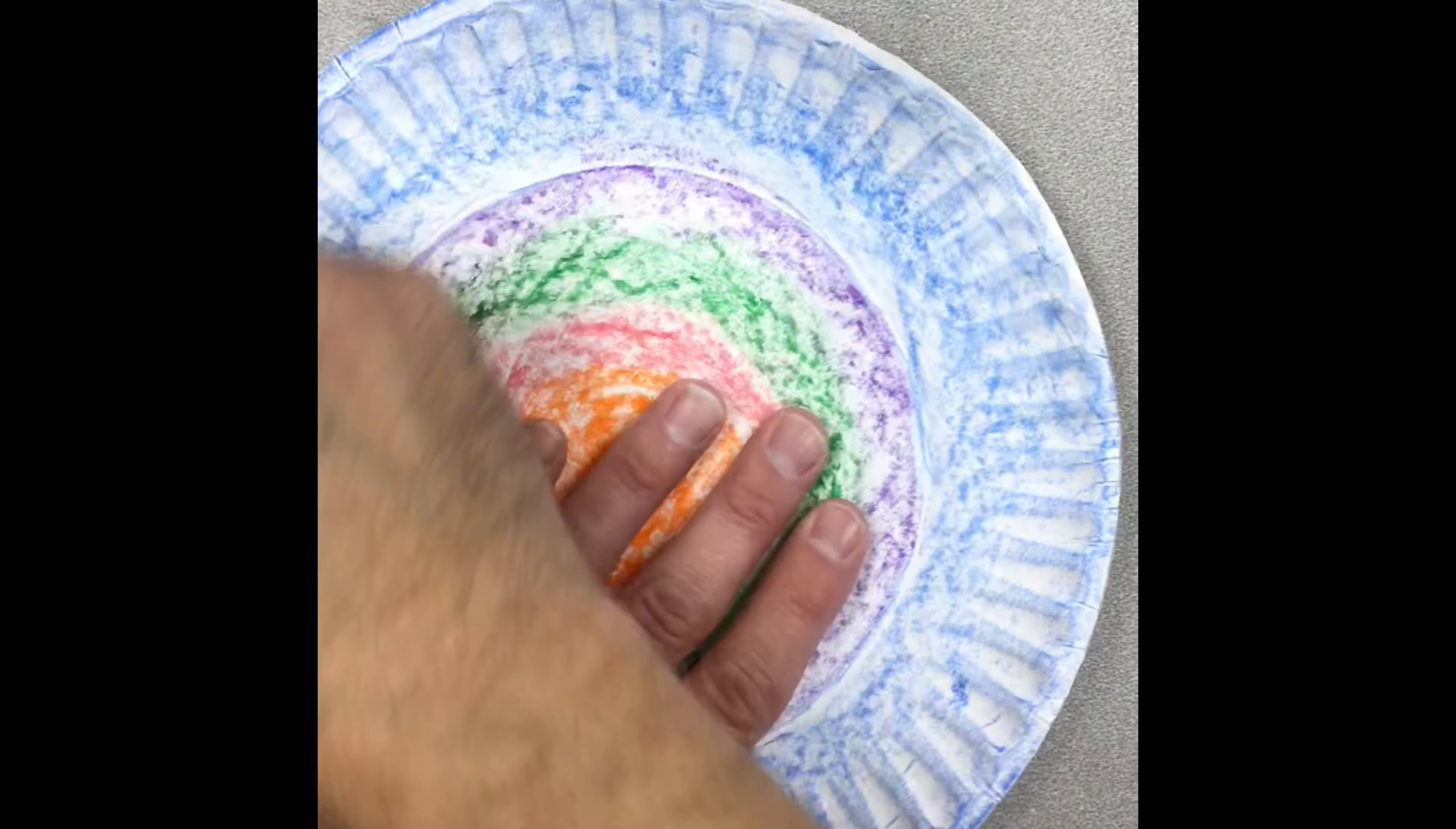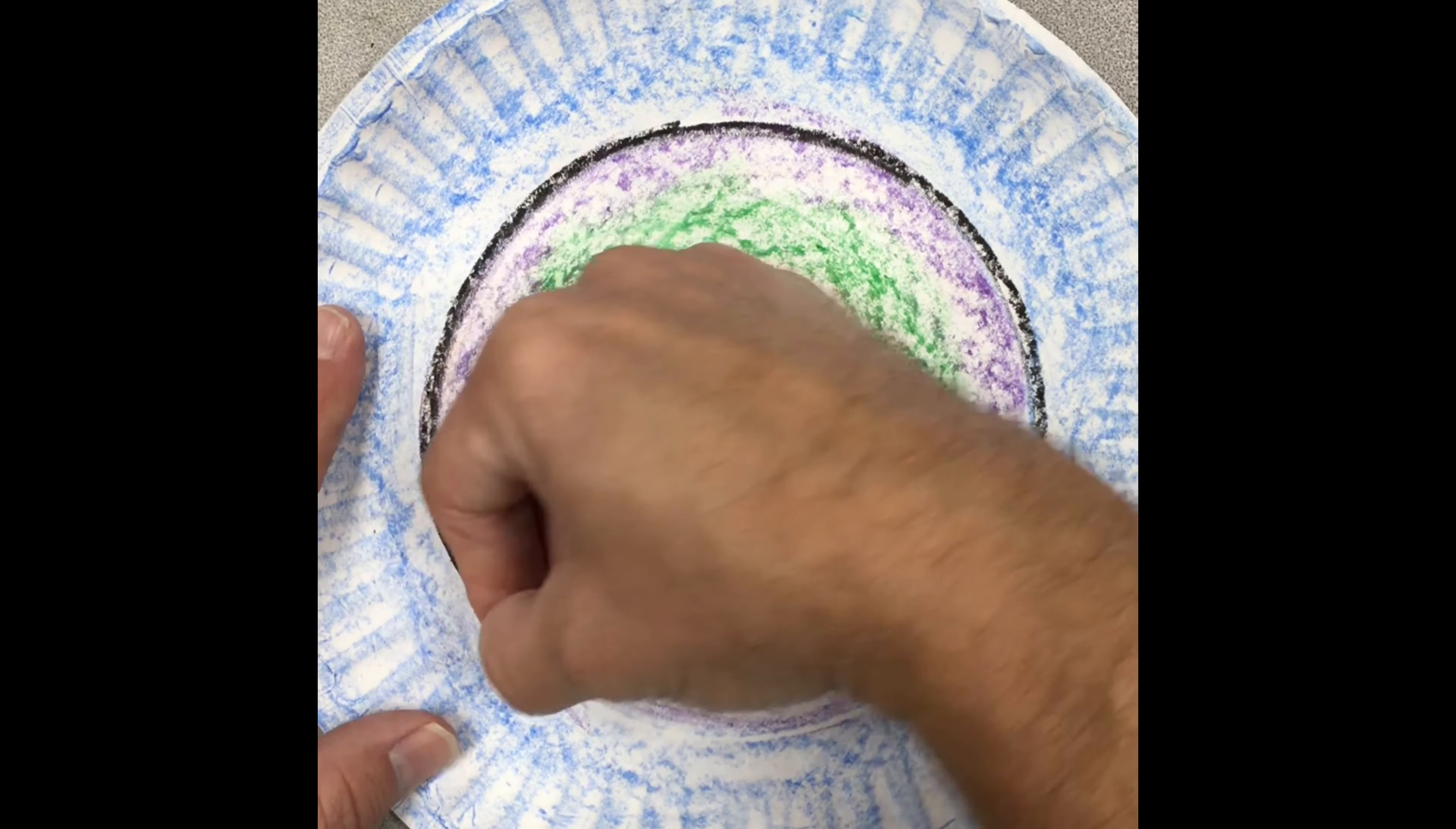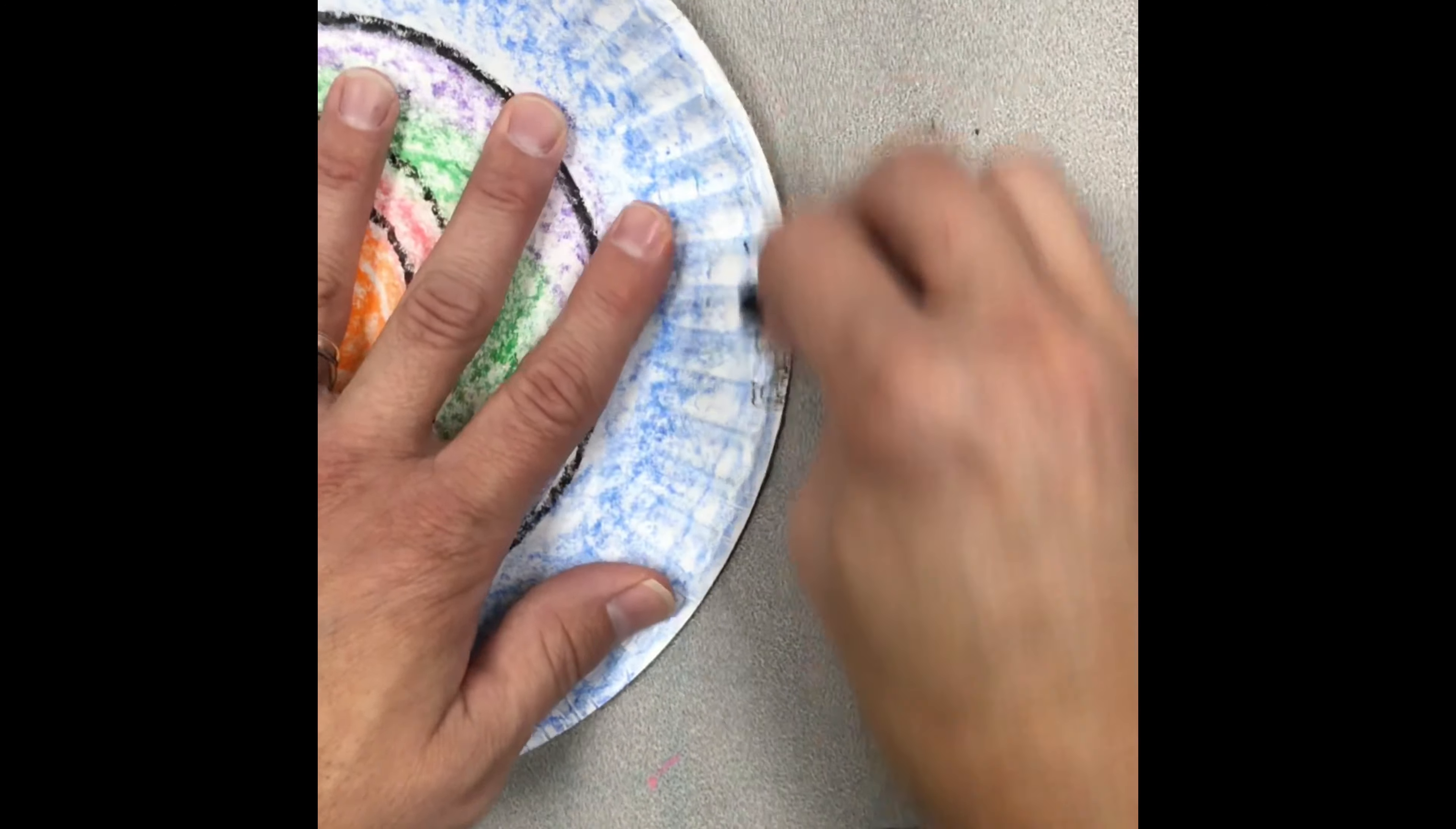So now I'm going to think about taking a black crayon and I'm going to first trace along that outside edge of that inside circle on my paper plate. So I'm going to go around that circle with my black crayon. Then I'm going to think about adding some other circles inside of my plate, maybe tracing around the orange color and maybe the red. I'm going to trace around it. I'm adding more symbols into my work.